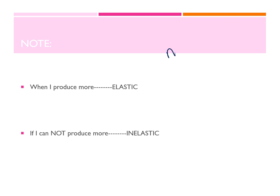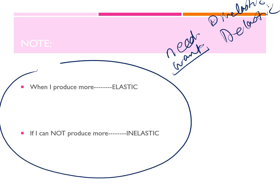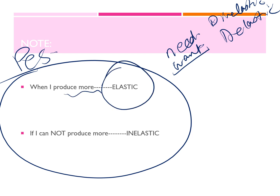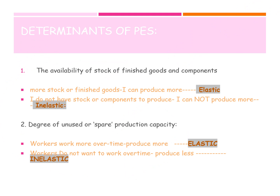Remember how in demand I told you: if no matter what you will buy the product and you consider it a need, the demand will be inelastic. Also, if it was a luxury and people can wait and don't want to buy it right now, then the demand would be elastic. Here is a certain rule for PES: if you can produce more, the supply is elastic. When you cannot produce more, it will be inelastic. Remember the cinema theater — in the short run he cannot produce more, he only has capacity for 30 people, and that is why we considered it perfectly inelastic.